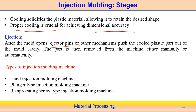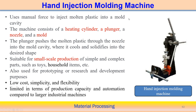There are different types of injection molding machines. One is the hand injection molding machine, which is manually operated. Another is the plunger type injection molding machine, and there is also the reciprocating screw type injection molding machine.